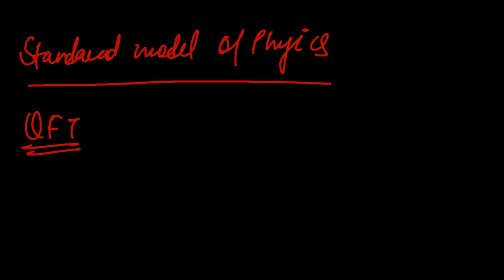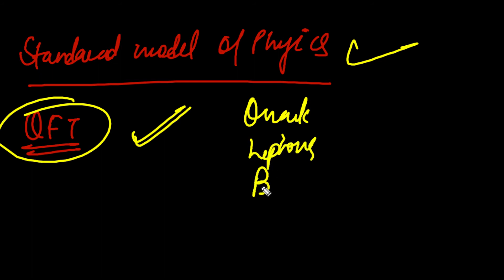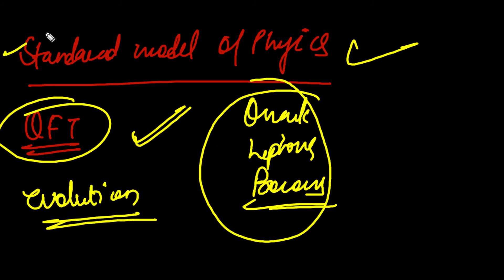We will talk about the standard model of physics. What we do in quantum field theory — the standard model of physics is quantum field theory. In the standard model, we classify elementary particles in the form of quarks, leptons, and bosons. The standard model of physics tells us how the universe has evolved. This is for understanding the evolution of the universe — the standard model of physics — with newer discoveries and progress in this field.